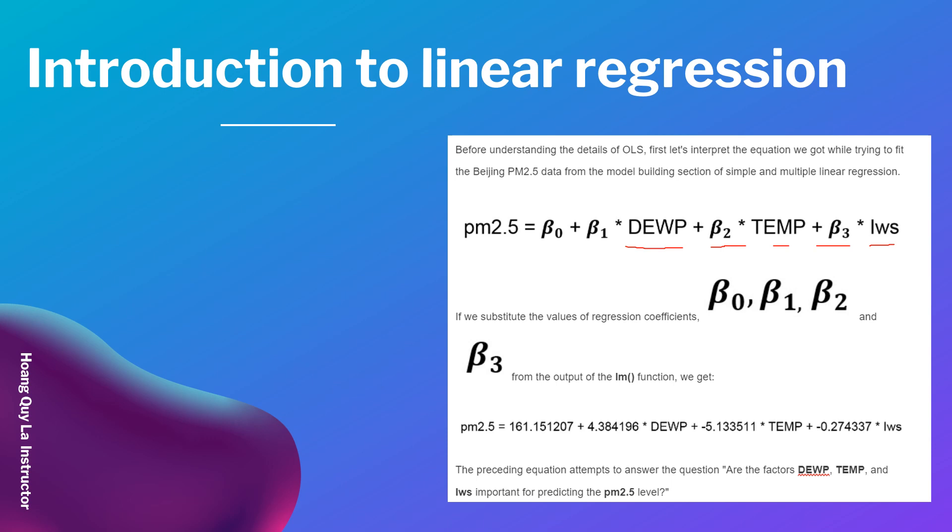If we substitute the values of the regression coefficients beta 0, beta 1, beta 2, and beta 3 from the output of the lm function, we get PM 2.5 equals 161 plus 4 times DEWP minus 5.13 times TEMP minus 0.27 times Iws. The preceding equation attempts to answer the question: